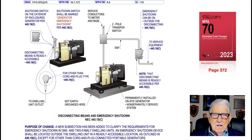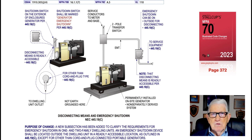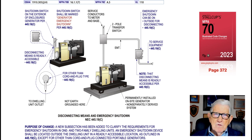This illustration deals with the disconnecting means and emergency shutdown in accordance with 445.19(C), covering a dwelling unit. The purpose of the change states — paraphrasing — that a disconnect switch or a cord-and-plug connection could serve as the disconnect, but an emergency generator shutdown means is still required in accordance with 445.19(C). Read the notes and call-outs in blue and you'll get a very good handle on exactly what this requirement is asking the installer or designer to do.